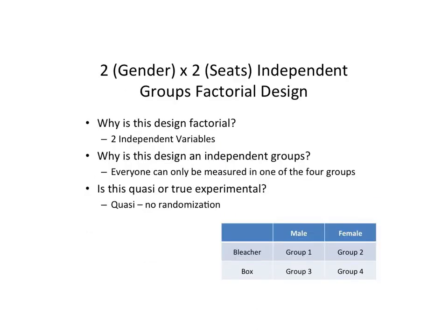Why is this a factorial design? Because we have two independent variables: gender and seat type. Why is it an independent group? Because you can only be in one of the four groups — you can only be a male in the bleachers, not also a male in the box seats. Since we can't randomly determine who will be male or female, or who can afford box seats versus bleacher seats, this is going to be a quasi-experimental study.